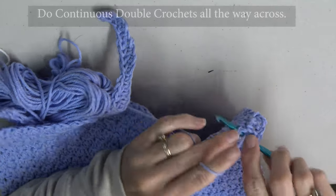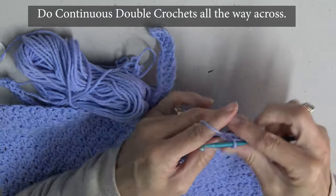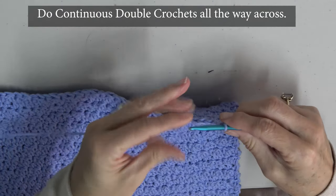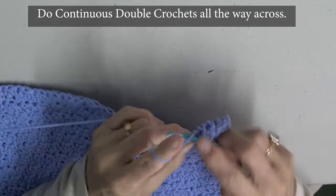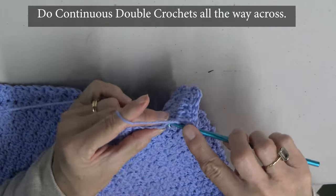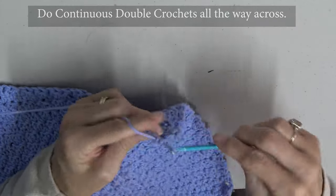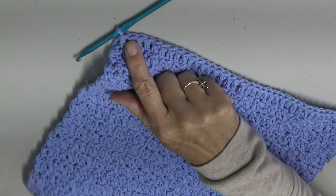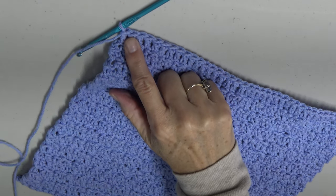But now we are going to do continuous double crochets all the way across the row that you just finished. And so you're going to continue this across until you get to the corner. And at the corner, we need to pause and we will be putting three double crochets in the corner so that you can make a flat project and go down the side of the row.